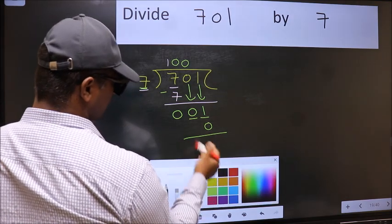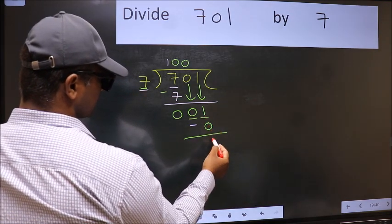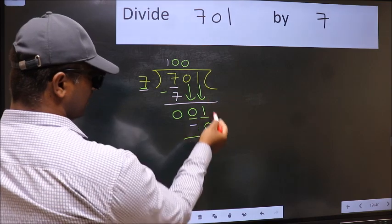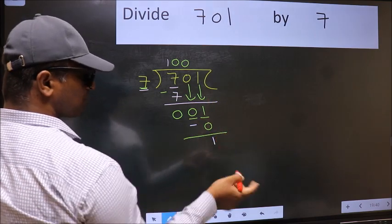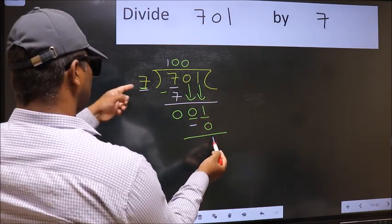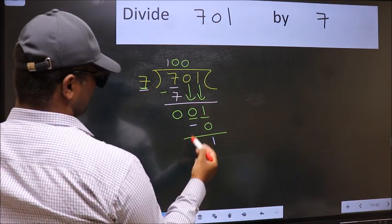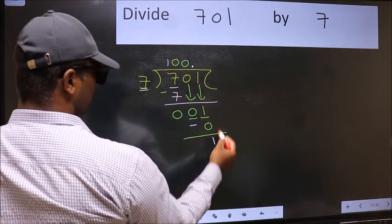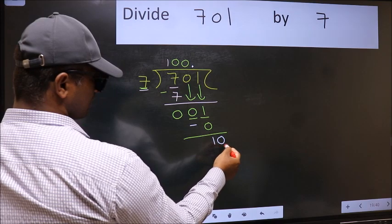Now, you should subtract. 1 minus 0, 1. Over here, we did not bring any number down, and 1 is smaller than 7. So, now we can put dot and take 0. So, 10.